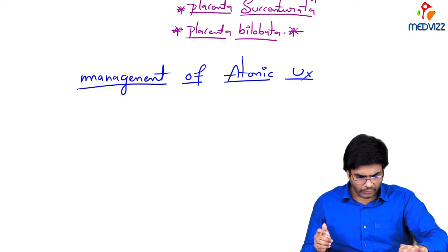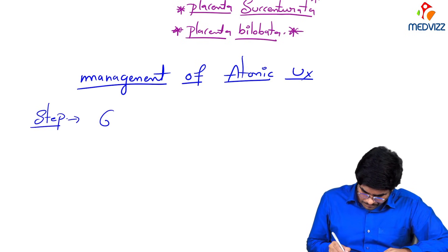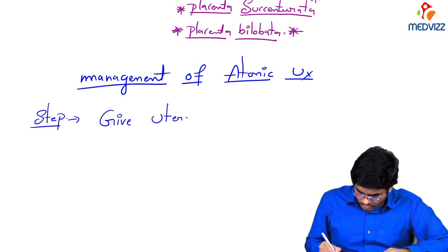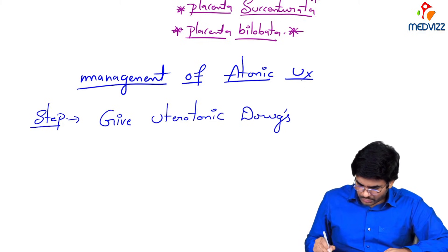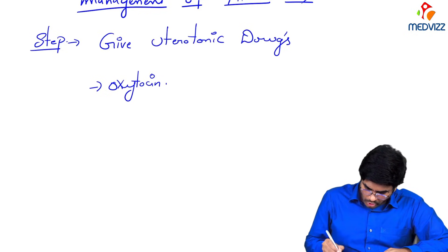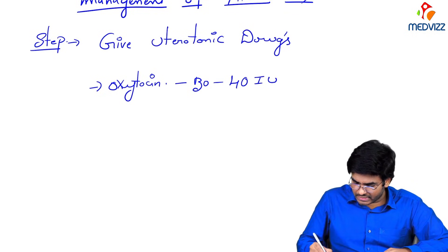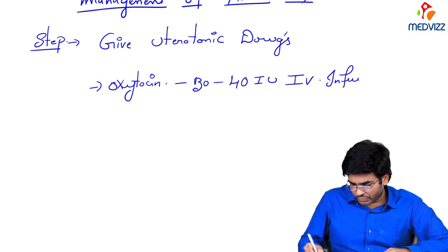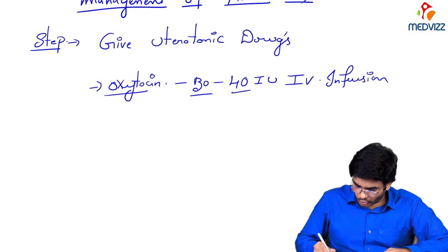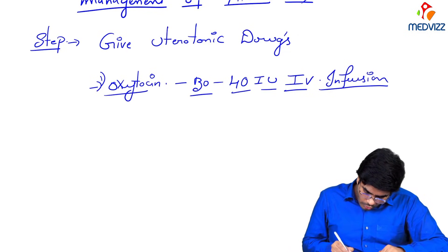Step one: give uterotonic drugs. The most important drug we all know is oxytocin. Give oxytocin 30 to 40 international units IV infusion so that the uterus will start contracting. If there is no oxytocin available, then go for methyl ergometrin.